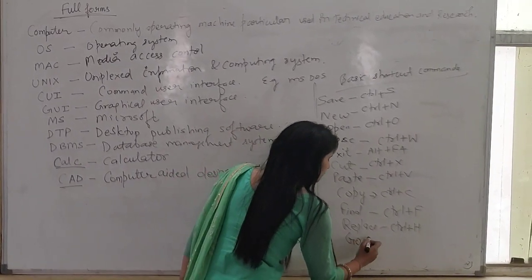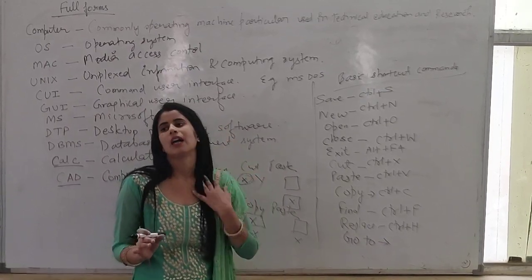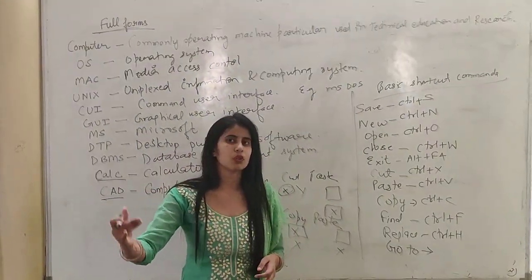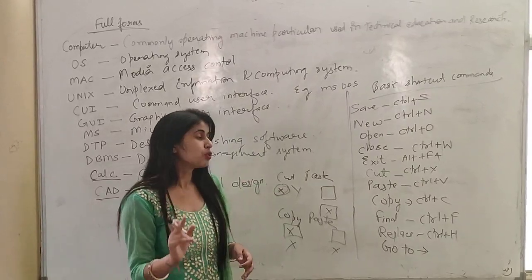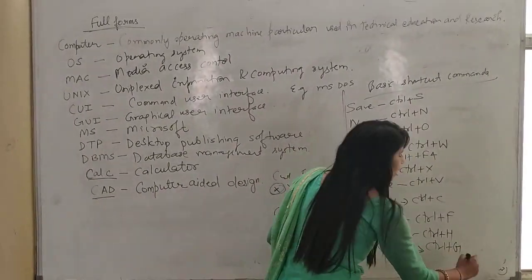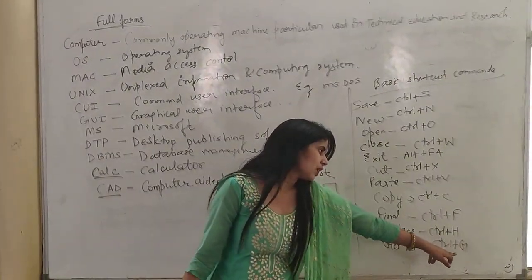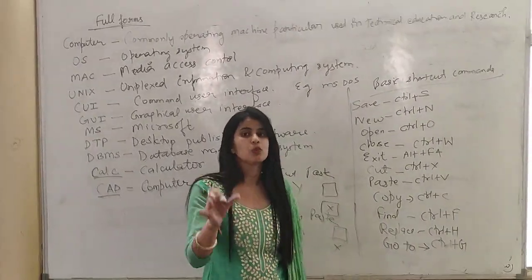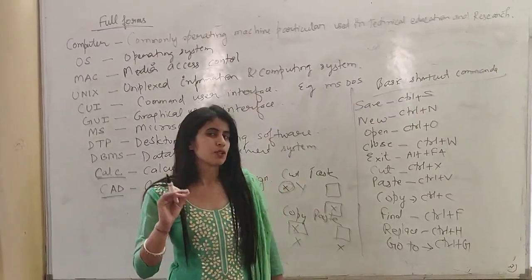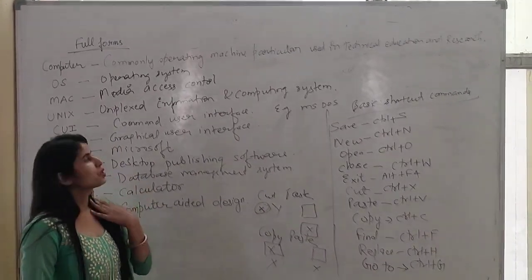Next is Go To. Suppose you have made a report with 10 pages and you want to go directly to page 2 or page 4 — use Go To. The Go To command is Control+G. When you use Control+G, it will ask you which page number you want to go to. If you enter page 2, you will switch directly to page number 2.